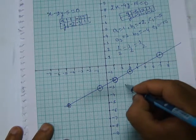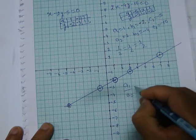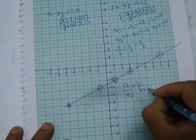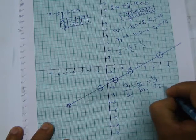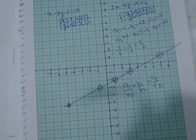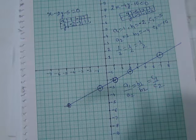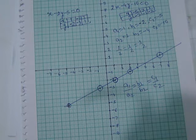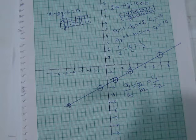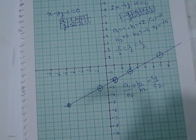We find that a1/a2 equals b1/b2 equals c1/c2 — this is the condition for infinitely many solutions because the lines are coincident, passing over one another. So we have learned that linear equations in two variables can have a unique solution with intersecting lines, no solution with parallel lines, or infinitely many solutions with coincident lines.